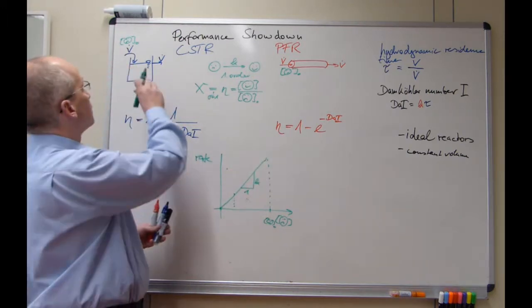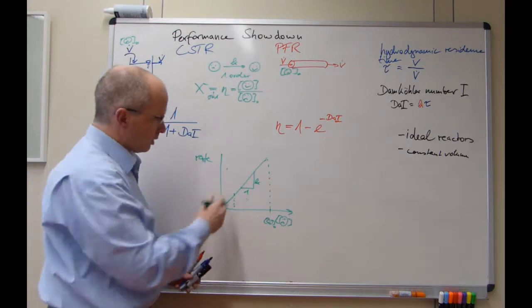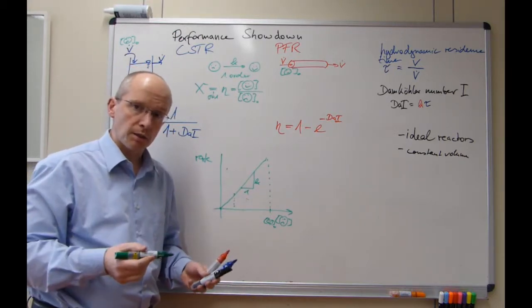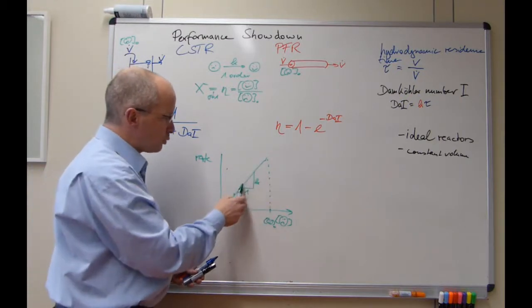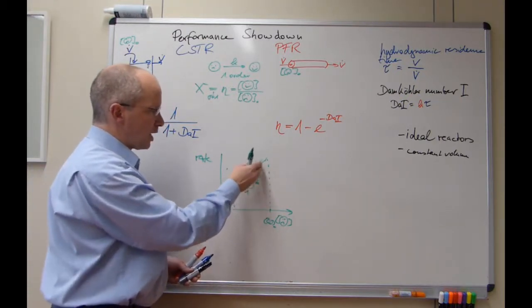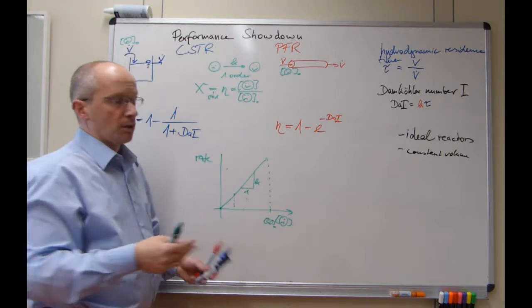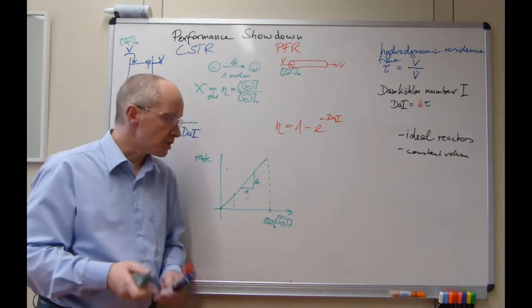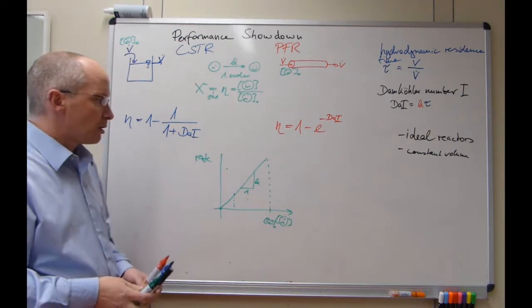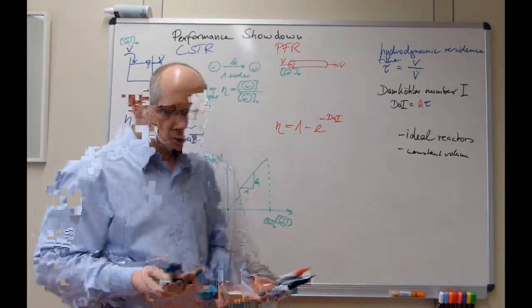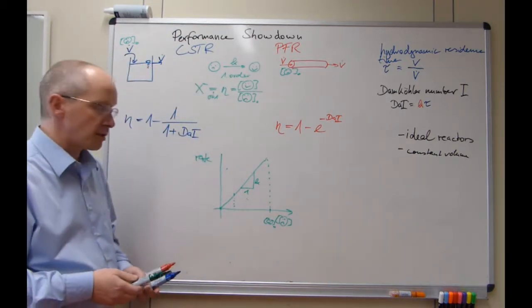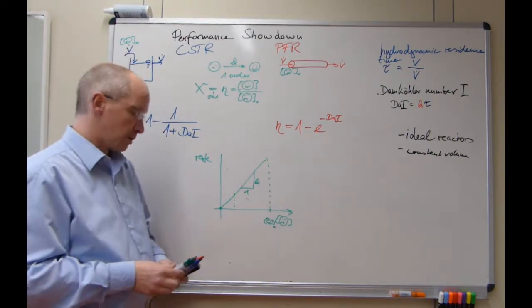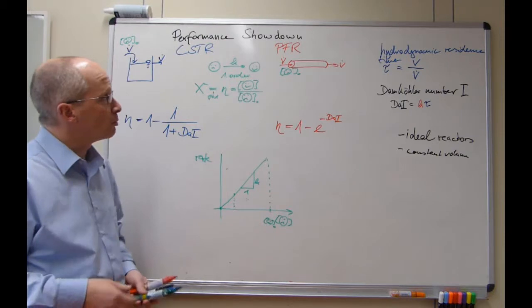Whereas in the continuous stirred tank reactor, you are stuck with one steady state concentration in the reactor. Therefore, you will lose a lot of this kind of rate here in terms of conversion to happiness. That is the reason why you have that. For first order reaction, you can also show that this is true for second order reactions as well. You will benefit much from doing the plug-flow reactor.